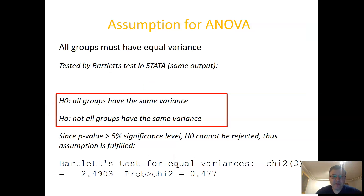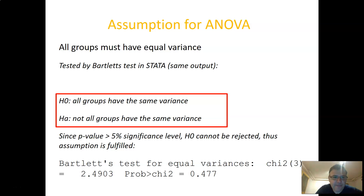The last step is to check for assumptions. In the case of ANOVA, the important assumption is equal variances across all groups, meaning all groups have the same variance. We test the null hypothesis that all groups have the same variance against the alternative that not all groups have the same variance. We do not want to reject the null hypothesis here, so a p-value above the five percent significance level means we are satisfied — the assumption is fulfilled. In this case with the washing powder titles, the p-value is above five percent, so the assumption holds.